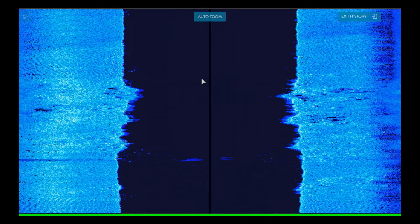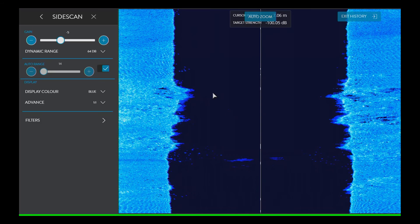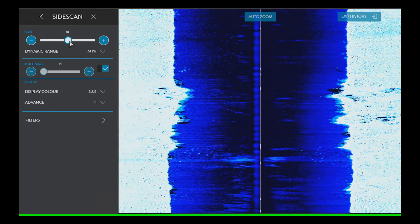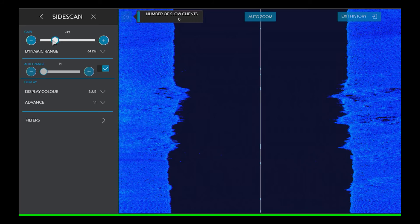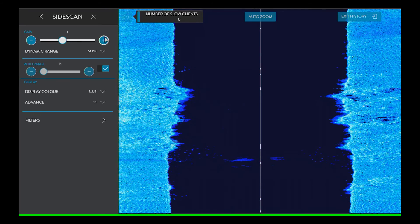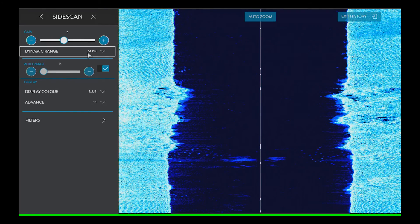Another license that we support is the side scan license, which is a different way of visualizing the sea floor data. And it gives you a higher resolution image of the sea floor so that you can see any subtle changes in the contours of the symmetry.